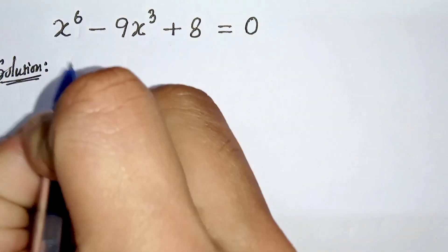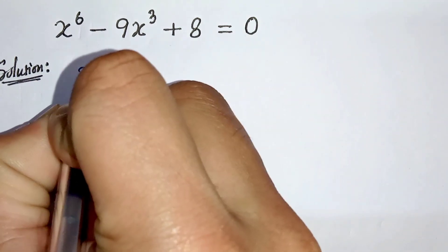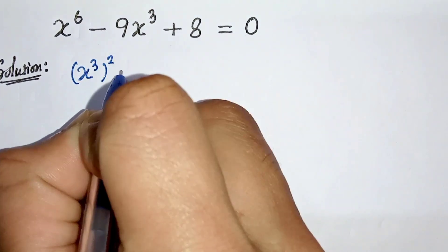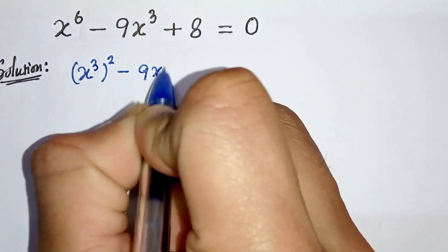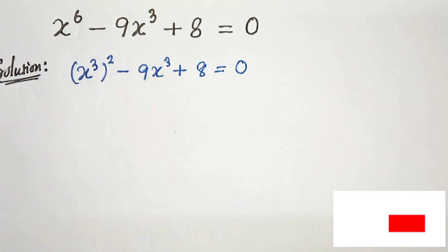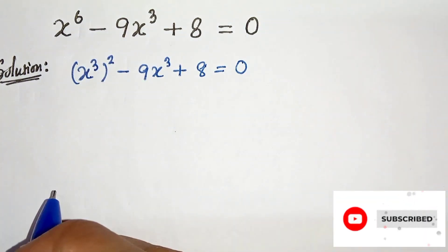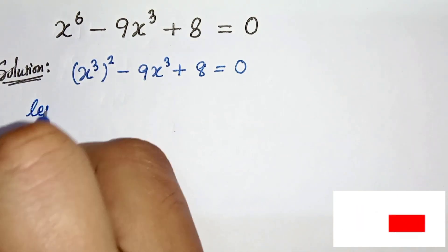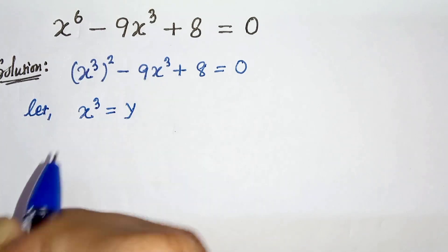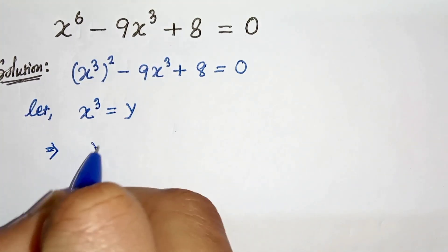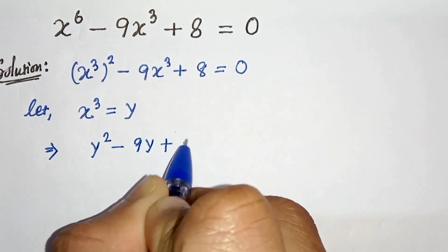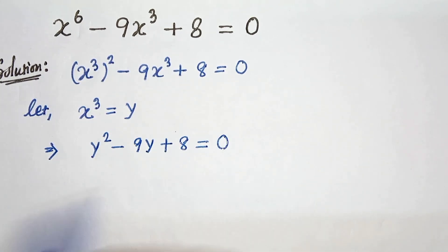First of all, we can write x to the power 6 as x cubed whole square, so the equation becomes x cubed whole square minus 9x cubed plus 8 equals to 0. Now let us consider x cubed as y. Let x cubed equal to y, and let's replace this. So we will get y squared minus 9y plus 8 equals to 0.